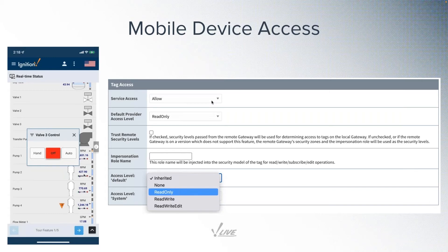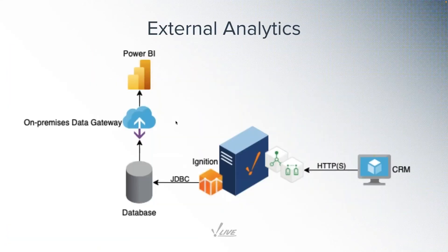Some companies may not want to provide all business-level employees with direct access to manufacturing applications at all, and may instead want to provide actionable insights in a more digestible format inside a dedicated analytics tool like Tableau or Microsoft Power BI. There are a number of ways to get data into these tools, such as with REST APIs, and I'm going to show an actual example we're using that allows us to visualize sales information inside of Power BI.